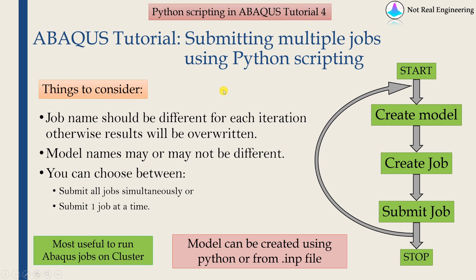Many times when we do a parametric study, we need to submit multiple jobs. The overall flowchart is shown here. Every time we create a model, we will create a job and then submit that job. This process we want to repeat many times, so we will write a Python script which puts a for loop around these three steps and keeps doing it multiple times.